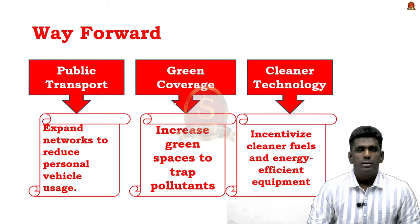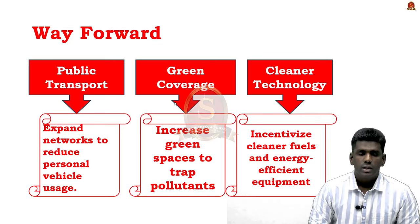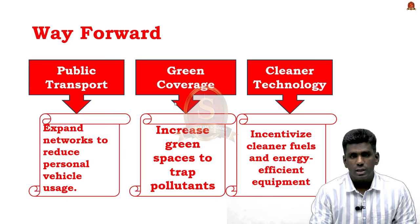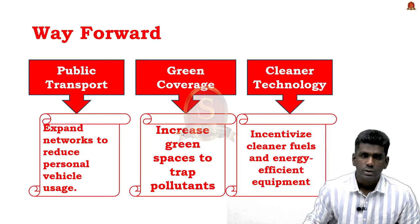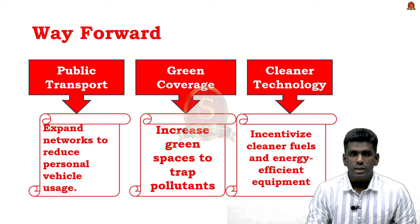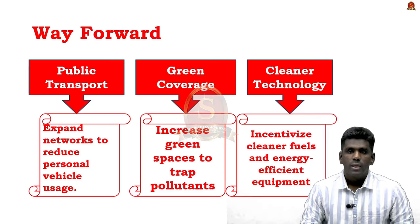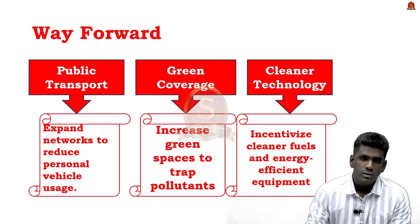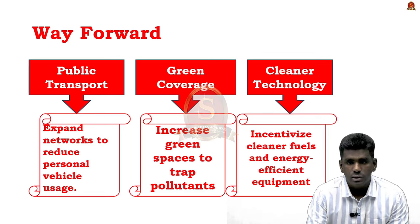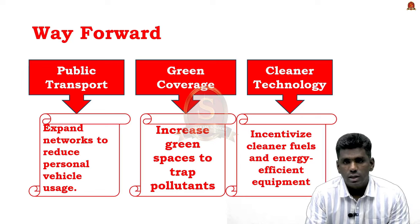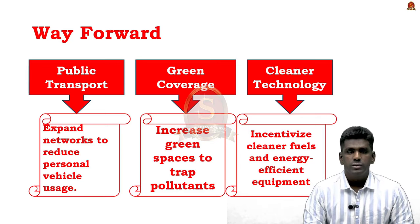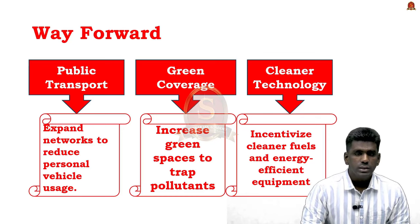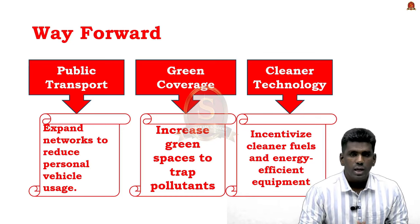Way forward points include: enhancing public transport networks — buses, metros, and shared mobility — to reduce reliance on personal vehicles and lower vehicular emissions; increasing green coverage and tree cover to trap pollutants; providing subsidies for cleaner fuels, energy-efficient technologies, and emission-reducing equipment for industrial units; and stricter monitoring, enforcement of rules, and enhanced data-driven decision making.